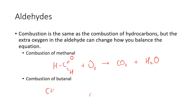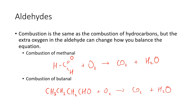Let's do butanal in a condensed structural formula: CH3, CH2, CH2, and CHO. So that's four carbons and the CHO group, with some oxygen going to CO2 plus H2O. Let's balance this. I need four CO2. And how many hydrogens do I need? Eight — so I need four H2O as well.